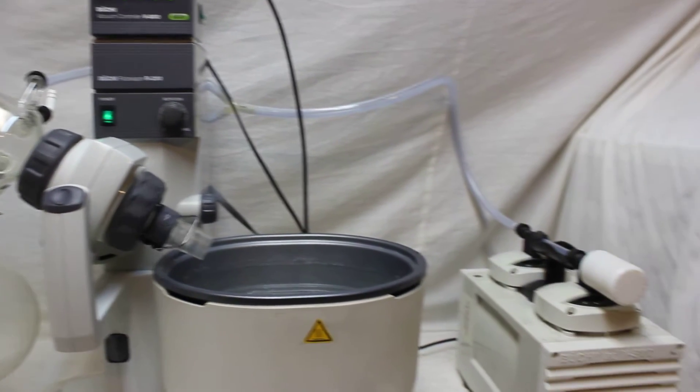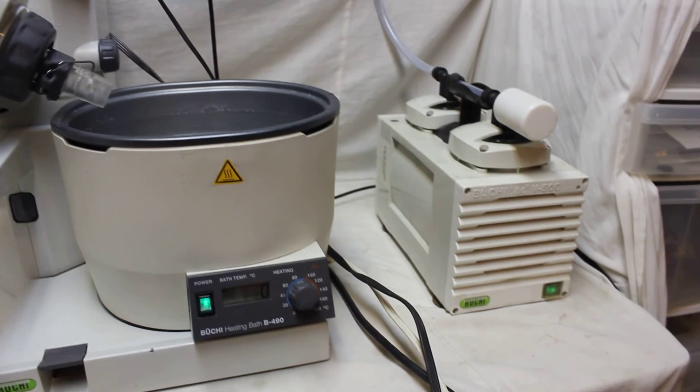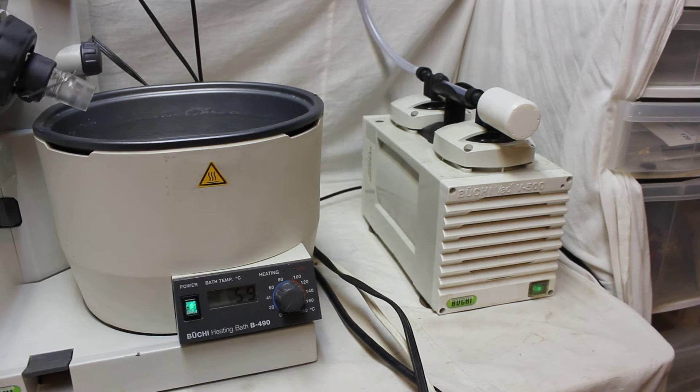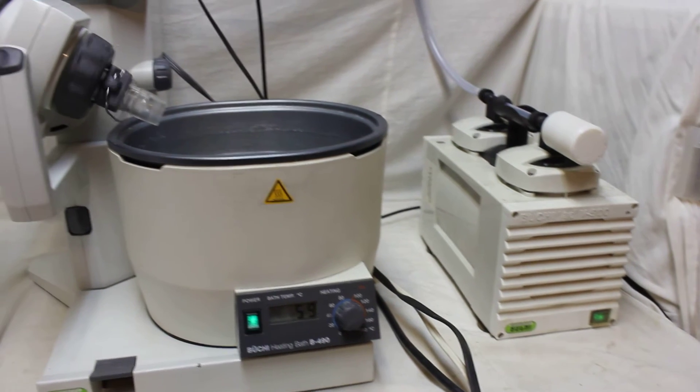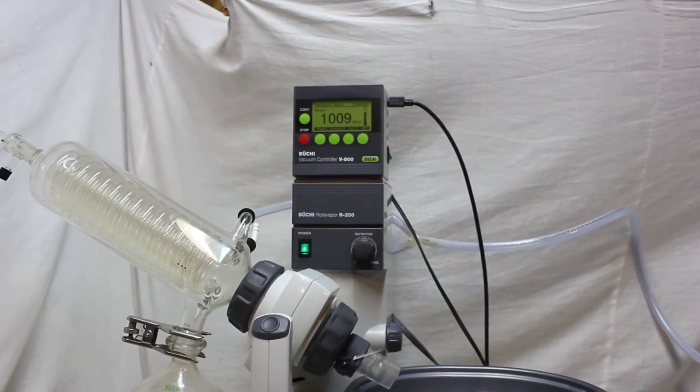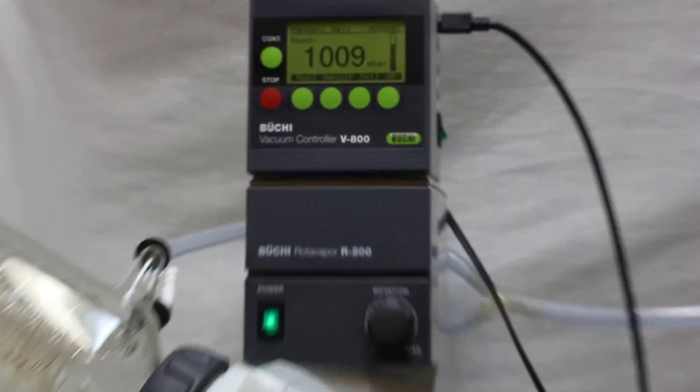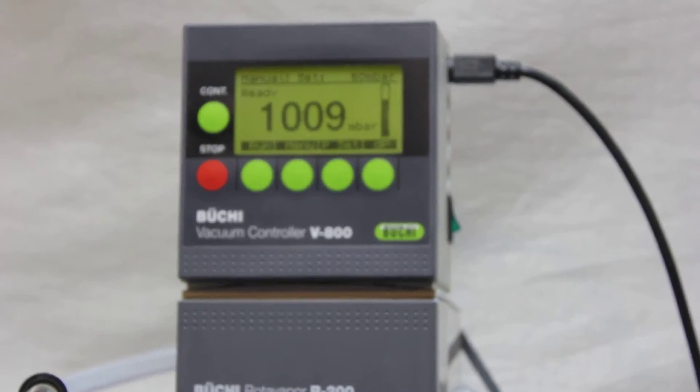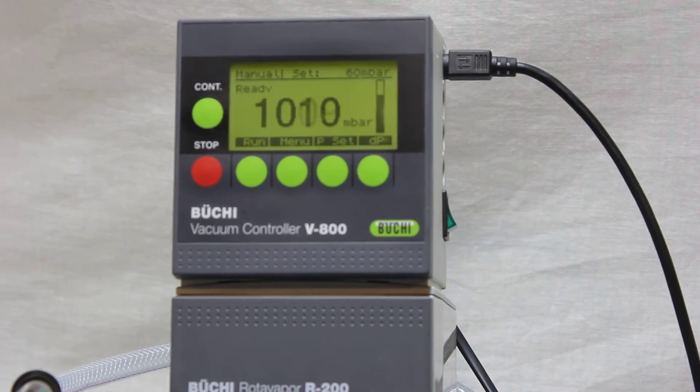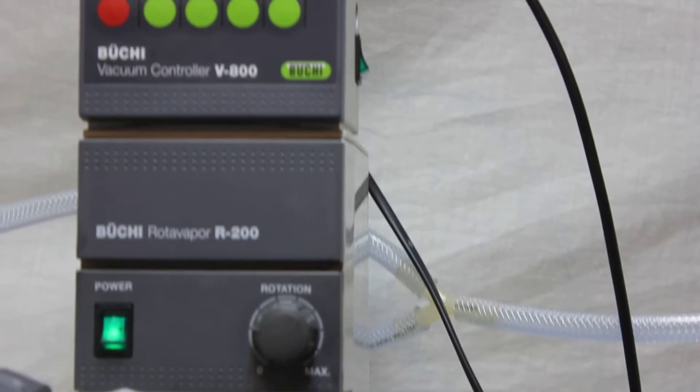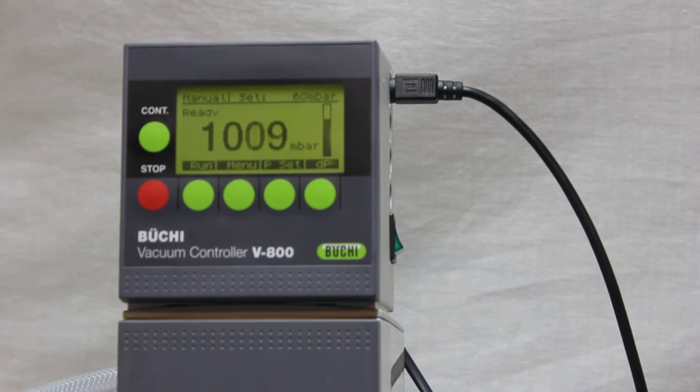Now the only thing left is attaching this equipment with the Buchi vacuum pump. V500 is already connected to vacuum controller V800 that you can see here. Let's see what happens when we turn it on.